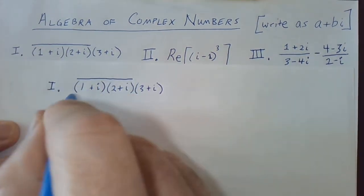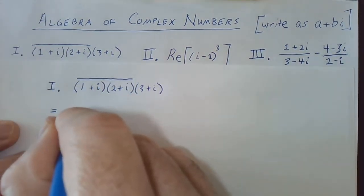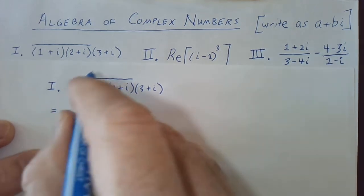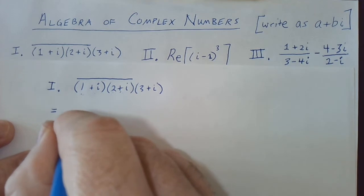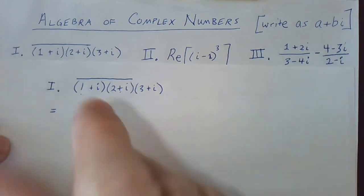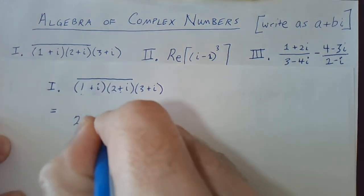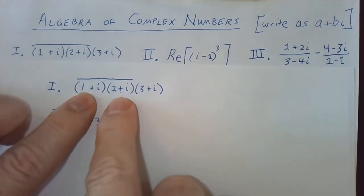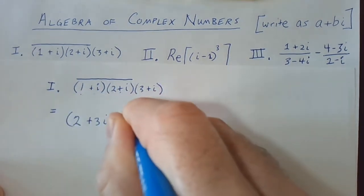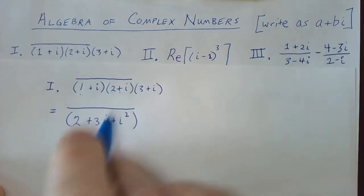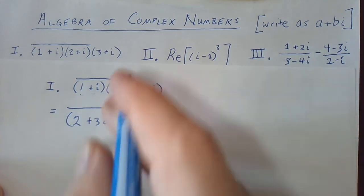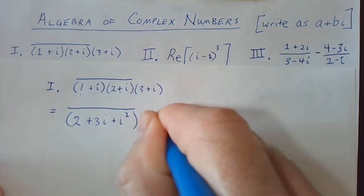I'm going to multiply these two together by foiling them out, and that would give me 2 plus 3i plus i squared. So far all I've done is multiply these two underneath the complex conjugate bar together, and then multiply by 3 plus i.